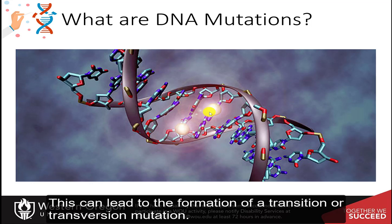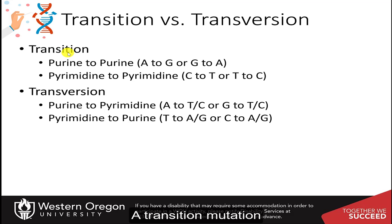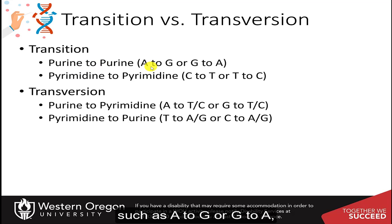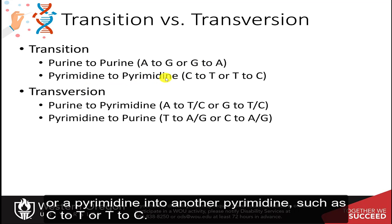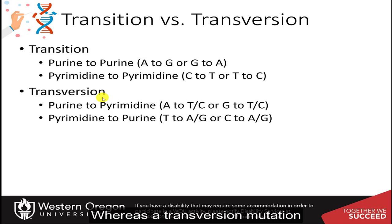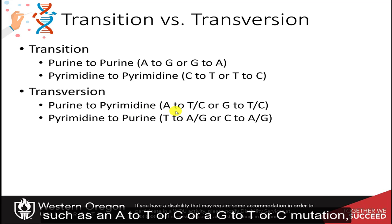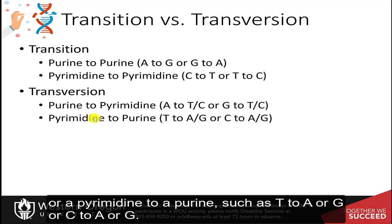This can lead to the formation of a transition or transversion mutation. A transition mutation is a point mutation that changes a purine nucleotide to another purine, such as A to G or G to A, or a pyrimidine to another pyrimidine, such as C to T or T to C. A transversion mutation refers to the substitution of a purine for a pyrimidine, such as A to T or C, or G to T or C, or a pyrimidine to a purine, such as T to A or G, or C to A or G.